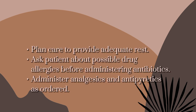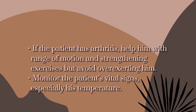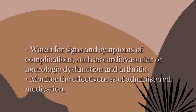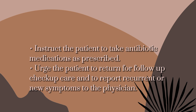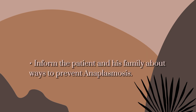For nursing interventions in the care of patients with anaplasmosis: plan care to provide adequate rest; ask the patient about possible drug allergies before administering antibiotics; administer analgesics and antipyretics as ordered. If the patient has arthritis, help with range-of-motion and strengthening exercises but avoid overexertion. Monitor the patient's vital signs, especially temperature, and watch for signs and symptoms of complications such as cardiovascular or neurologic dysfunction and arthritis. Monitor the effectiveness of administered medication. Instruct the patient to take antibiotic medications as prescribed. Urge the patient to return for follow-up care and to report recurrent or new symptoms to the physician. Inform the patient and family about ways to prevent anaplasmosis.